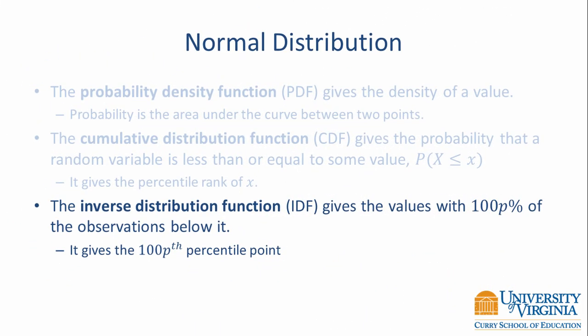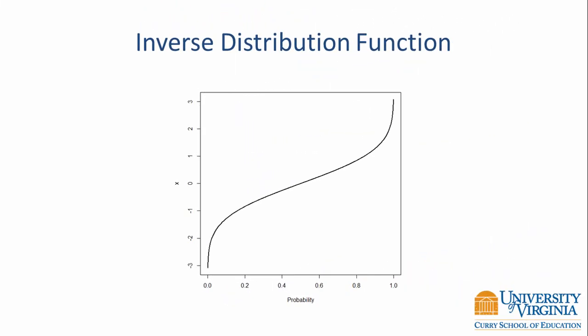The normal CDF gives us a percentile rank, but oftentimes we actually want a percentile point. To compute that for a normal distribution, we have to use the inverse distribution function. The IDF gives us the value for which one hundred pth percent of the observations are below it. It's a percentile point. A plot of the normal IDF is similar to the CDF, but the axes have been transposed.